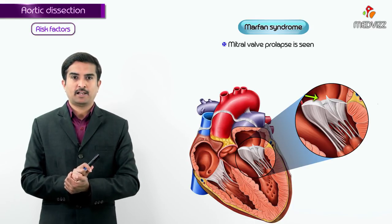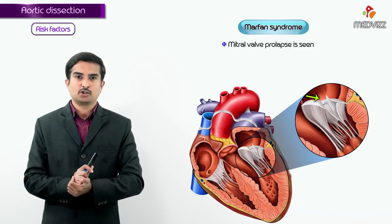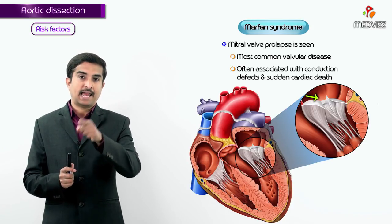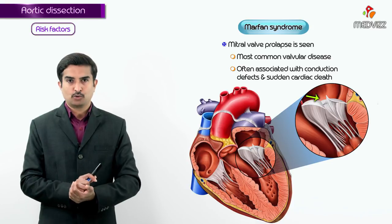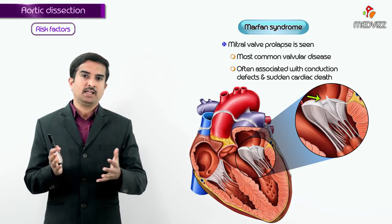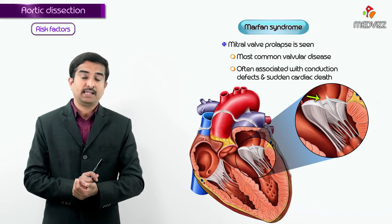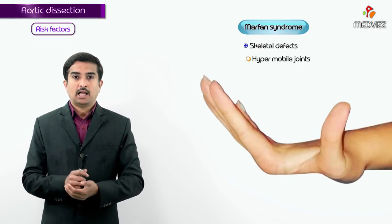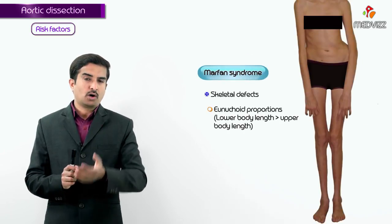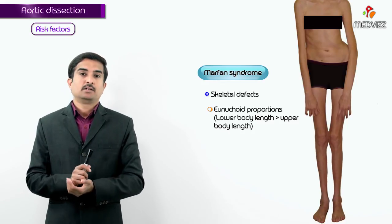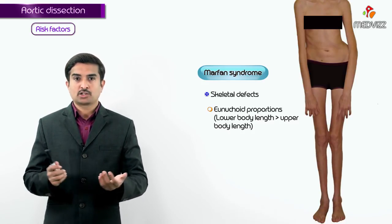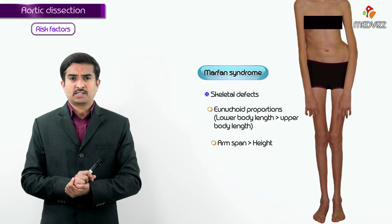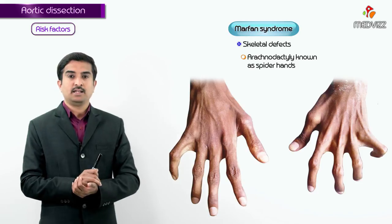Mitral valve prolapse is the most common valvular defect in Marfan syndrome; it is often associated with conduction defects and can cause sudden cardiac death. Due to defective fibrillin and elastic tissue synthesis, skeletal defects are also present, including hypermobile joints, eunuchoid proportions where lower body length is greater than upper body length, arm span greater than height, and arachnodactyly — often called spider hands.